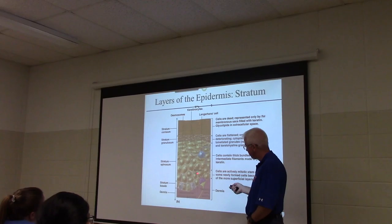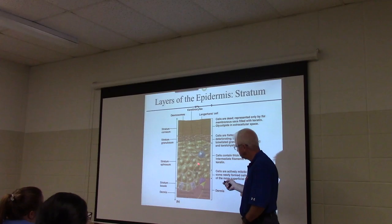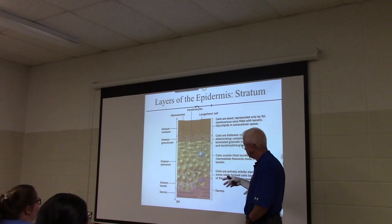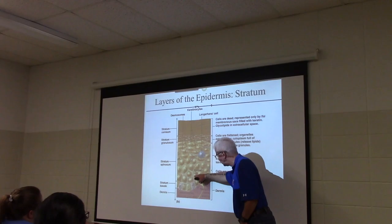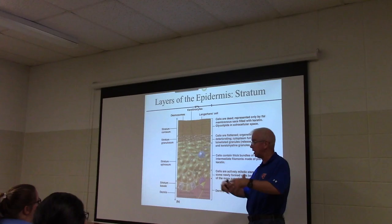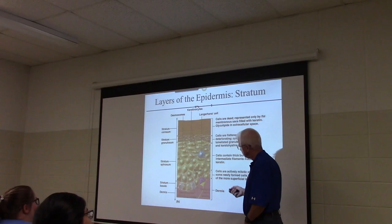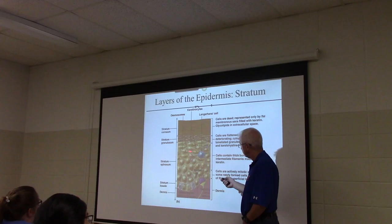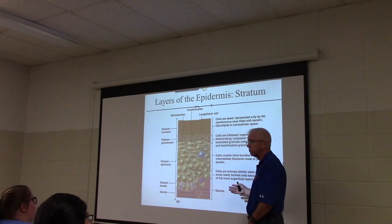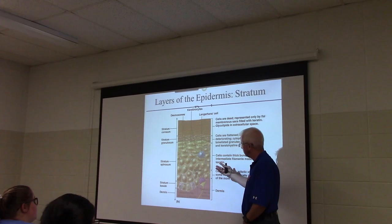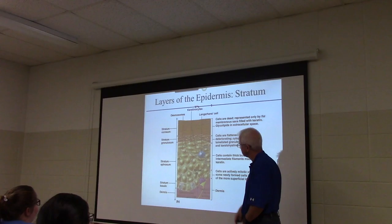Melanocytes are in the basal layer and Merkel cells are in the stratum basale. The next layer up is called the stratum spinosum, where you normally find the Langerhans cells. These cells divided off the basal layer and migrated outward — spinosum cells used to be basale cells. The stratum spinosum is also the typical place for squamous cell carcinoma to develop. It's a pretty thick layer and the cells don't really look flat there.